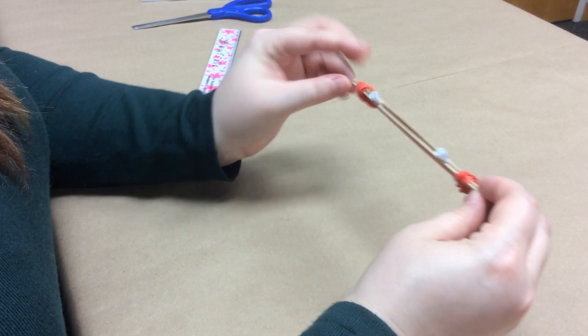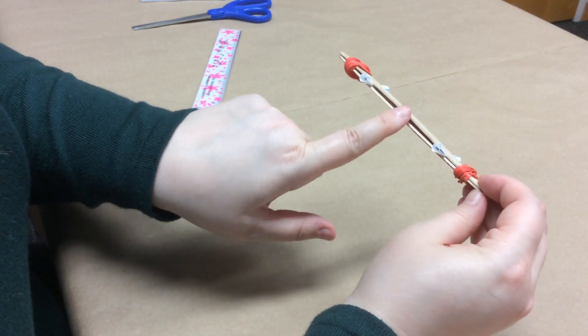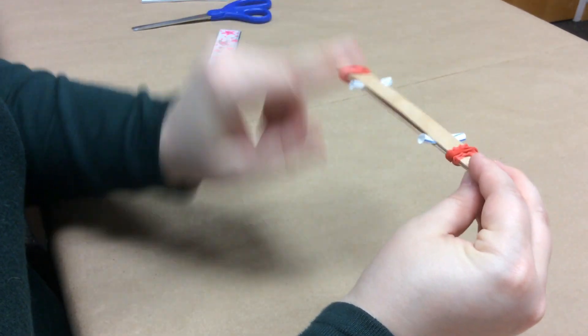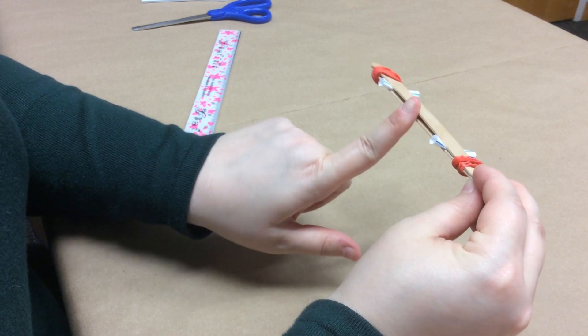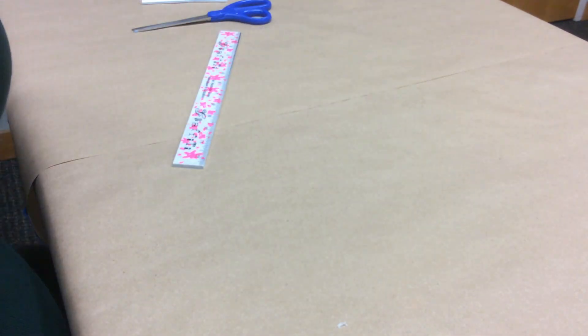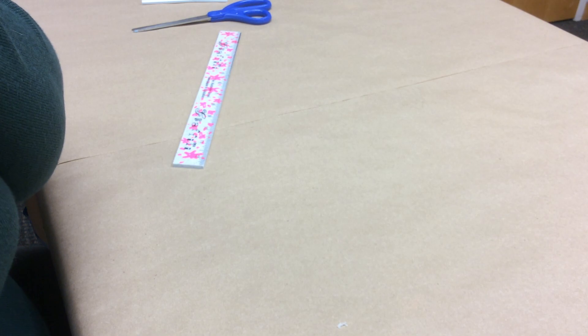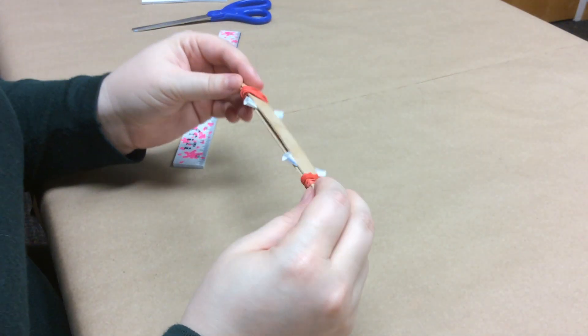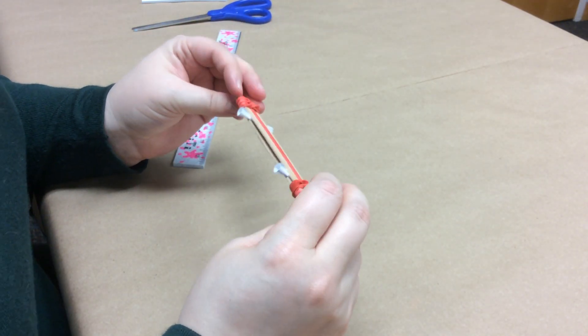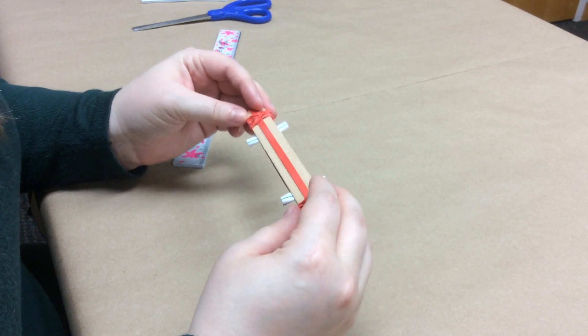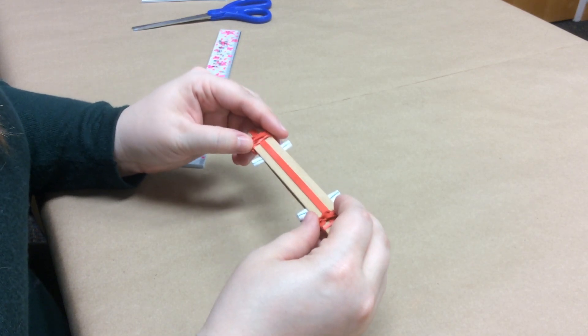But what you are going to do is you are going to hold it up to your mouth right here. So you are going to hold it like this in your two hands. You are going to put your mouth right here and you are going to blow through it. So it should make this sound. Kind of like a kazoo. It is a pretty hideous sound. But that is okay.